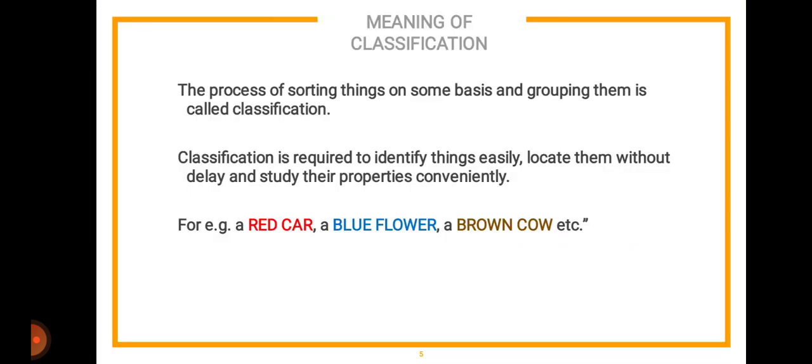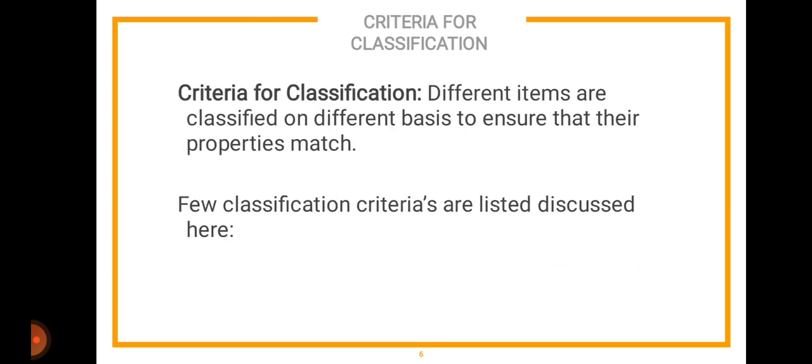The first thing we are going to talk about is classification. The process of sorting things on some basis and grouping them is called classification. Classification is required to identify things easily, locate them without delay, and study their properties conveniently. For example, if you are looking for medicine in your house, the first place you'll look is the first aid box. Other examples could be a red car, a blue flower, or a brown cow — here we are taking color as the classification method.